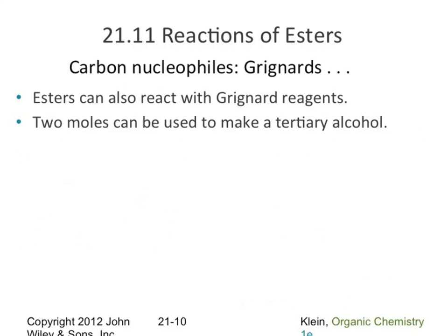We can also react esters with Grignard reagents. Starting with an ester — say, O-methyl — and reacting with a Grignard reagent like CH3MgBr, the Grignard supplies a strong carbon nucleophile that attacks the carbonyl carbon. We break the pi bond and draw out our tetrahedral intermediate, with the magnesium bromide drawn near the oxygen for positive-negative stabilization.